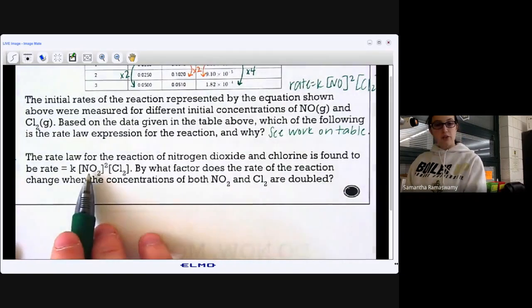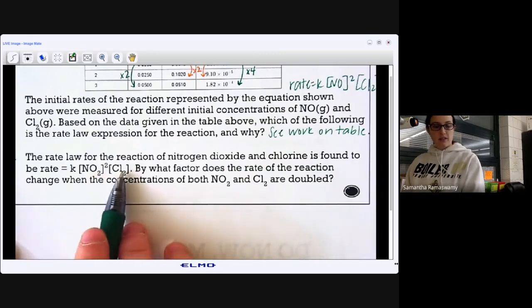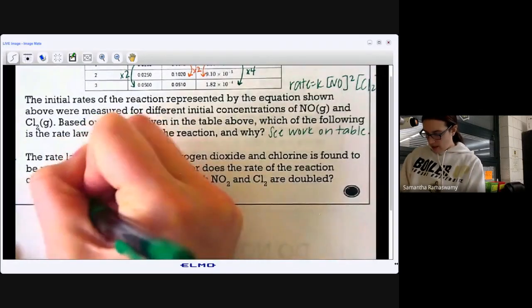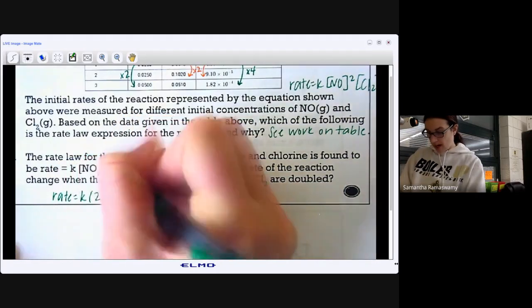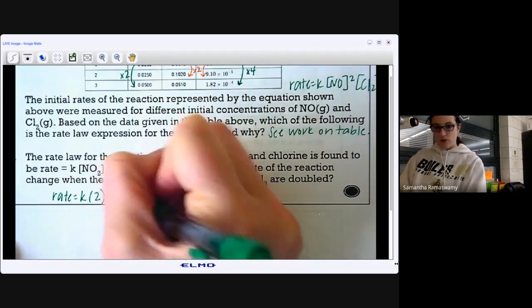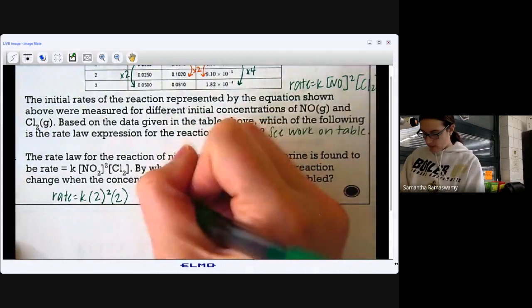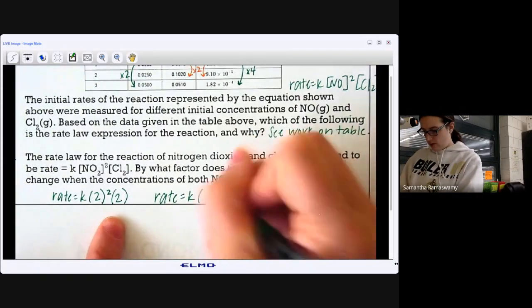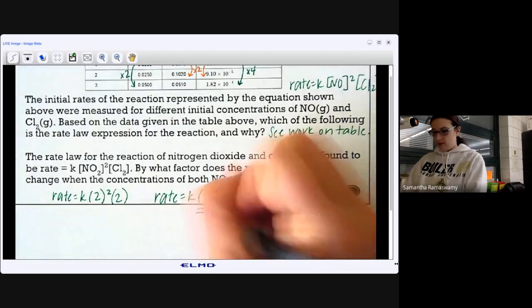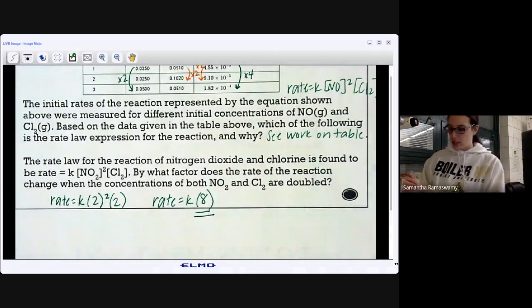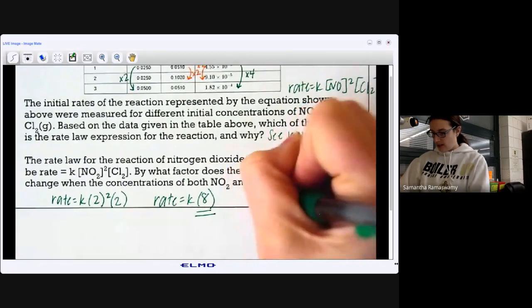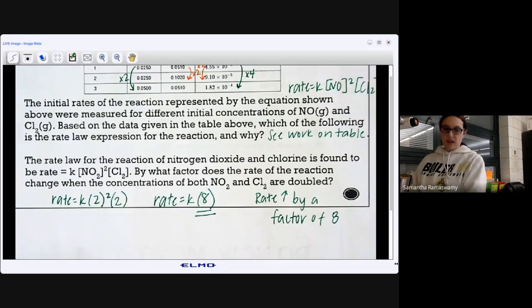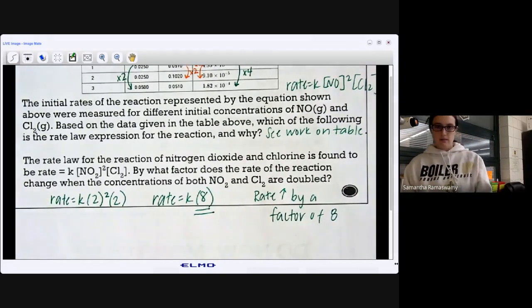So what we can do is let's just plug in twos for each of these. We're using two because it says that both of these concentrations are doubled. So if I do rate equals K times two squared, because it's second order, times two. Let's multiply all those numbers together. Rate equals K times, so two squared is four. Four times two is eight. There's your factor. So it changes by a factor of eight. So rate increases by a factor of eight. That means rate increases eight times the original rate.